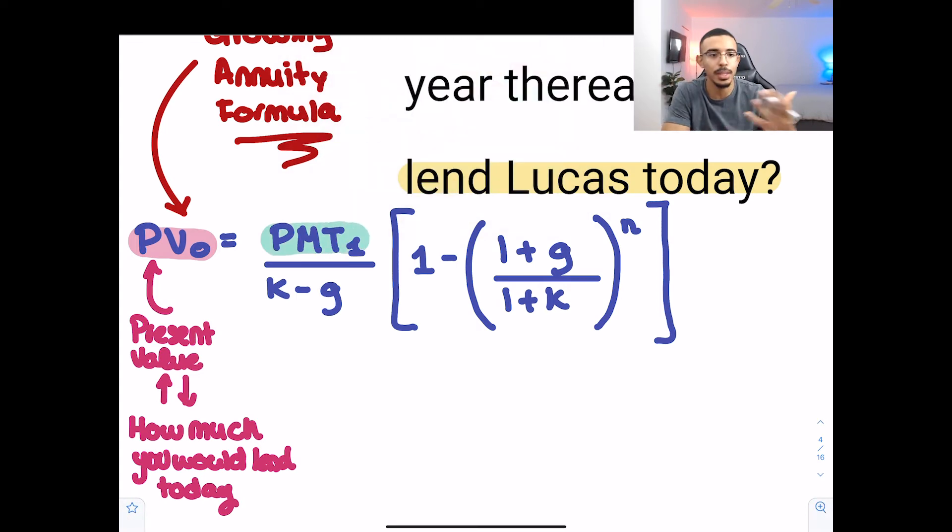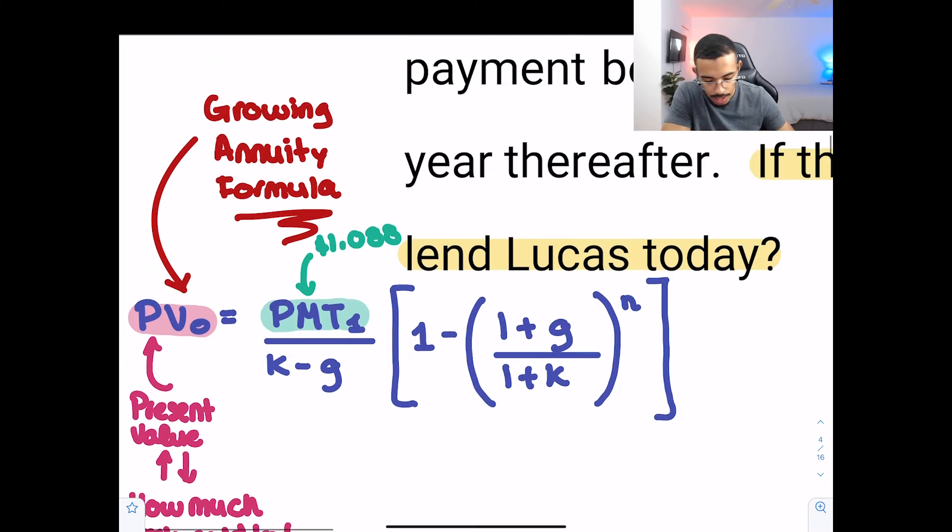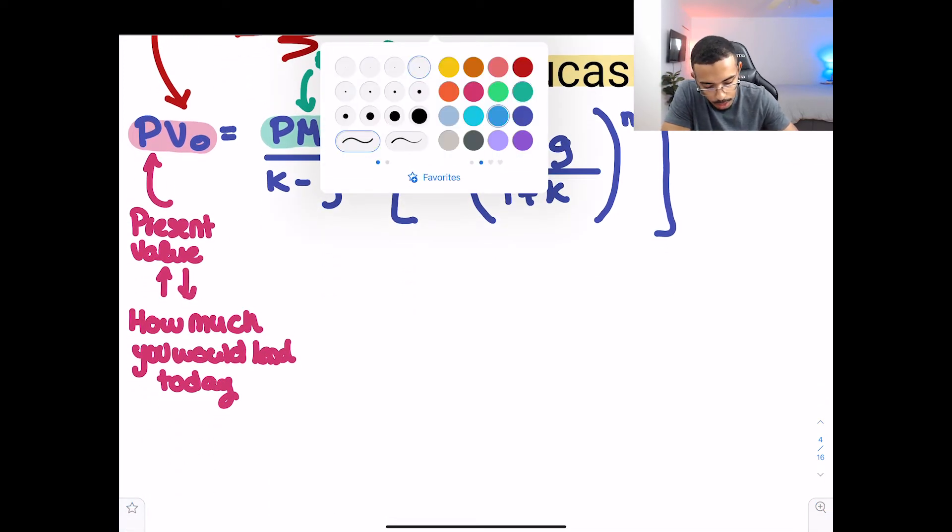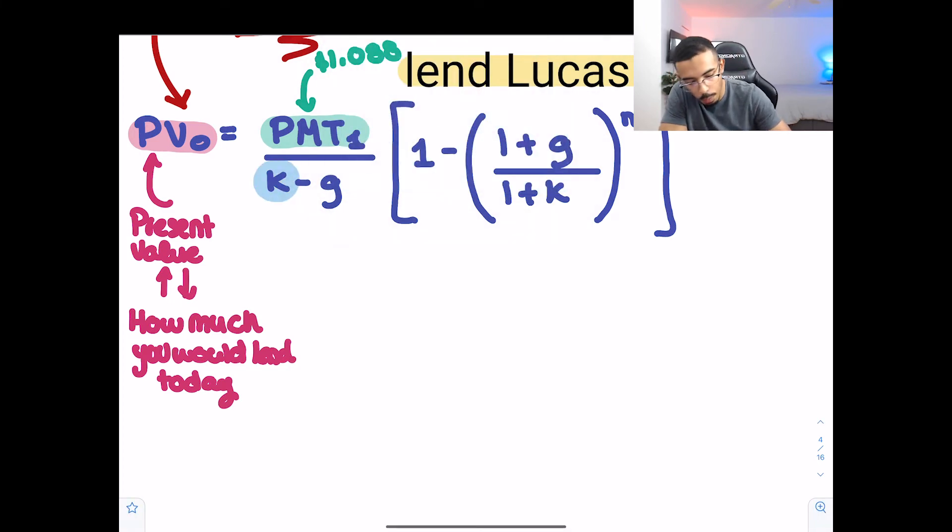We know that payments, that's simply going to be equal to the first payment Lucas is going to give us at the end of this year. In this case, that would be $1,088. Then we want to identify K. What is K for us? K, in this sense, will be our discount rate. If you studied the material, you know that K is essentially your discount rate or your interest rate, depending on the type of function and scenario we're looking at. In this case, we want to find the present value, so K will be our discount rate. We know that this is 5%.